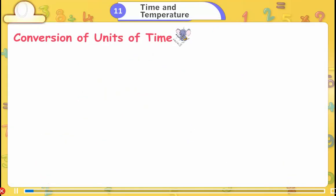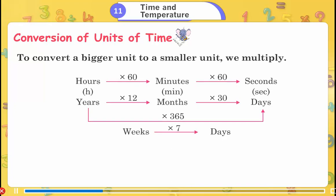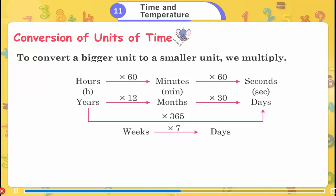Conversion of Units of Time. To convert a bigger unit to a smaller unit, we multiply. Hours multiplied by 60 gives minutes; minutes multiplied by 60 gives seconds. Years multiplied by 12 gives months; months multiplied by 30 gives days.